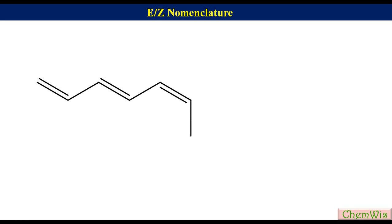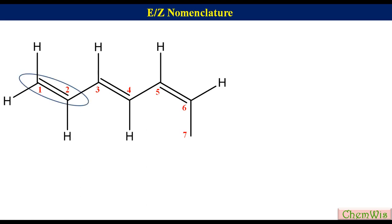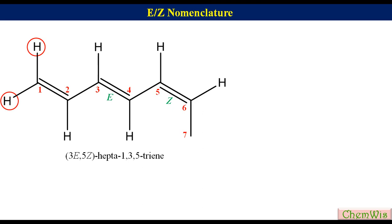Let's look at this triene. We need to find its complete IUPAC name. We will do numbering from the side giving smaller numbers to the alkenic carbons, so the numbering will be: 1, 2, 3, 4, 5, 6 and 7. Put the hidden hydrogen atoms. The double bond between C1 and C2 doesn't qualify for E/Z configuration because C1 bears two identical hydrogen atoms. The configuration of the C3-C4 alkene is E because the high priority groups are on opposite sides. The configuration of the C5-C6 double bond is Z because the high priority groups are on the same side. So the name is (3E,5Z)-hepta-1,3,5-triene.